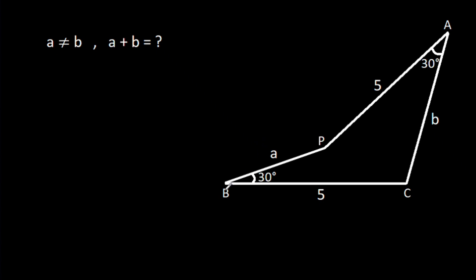We have been given that BP is A, AP is 5, AC is B, BC is 5, angle CAP is 30 degrees, and angle CBP is 30 degrees. A is not equal to B. Then we have to find A plus B.